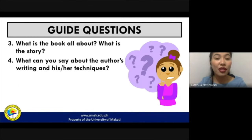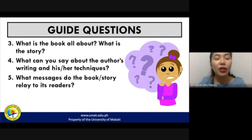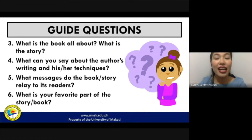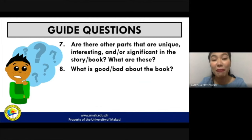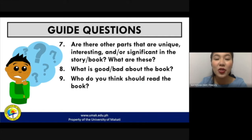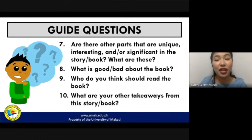Another guide question: what can you say about the author's writing and techniques? Try to evaluate how the book was written. Does it have any message for its readers and was it relayed effectively? As a reader and consumer of the book, what was your favorite part? You can also talk about parts that are unique, interesting, or significant. Point out things that are not just bad but also very good about the book. As a critic, you must also make recommendations — who do you think should read it? And if there are other takeaways, you can write about those as well.